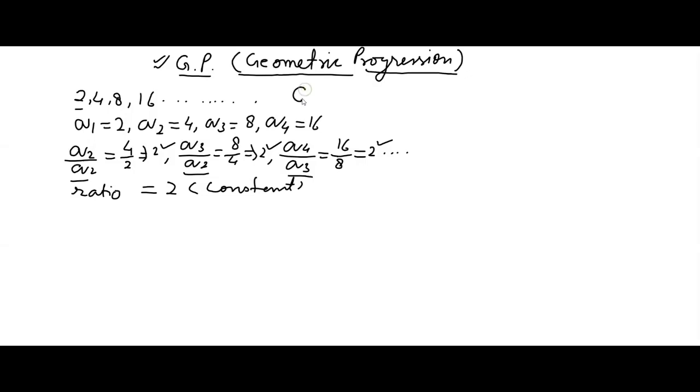In GP, we need general term, or general term of a GP. An is equal to A times R raised to the power n-1. R is known as the common ratio.